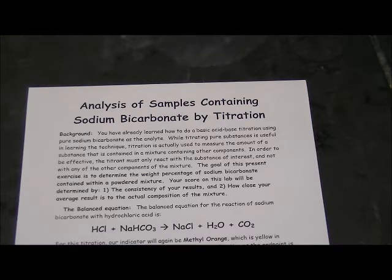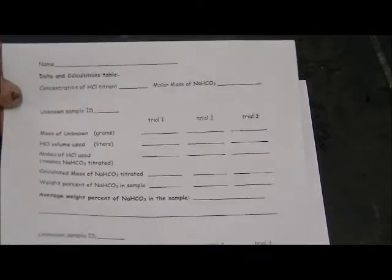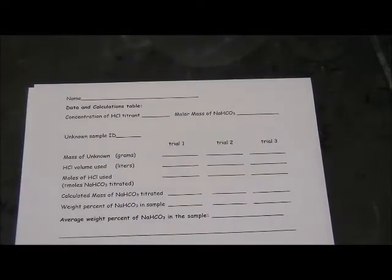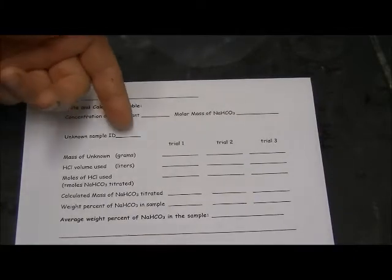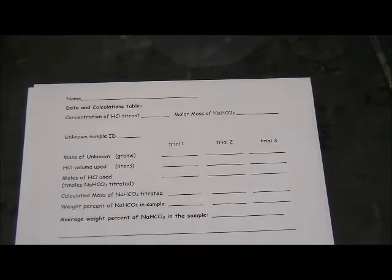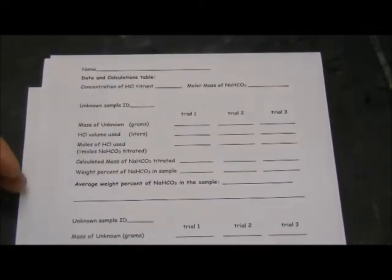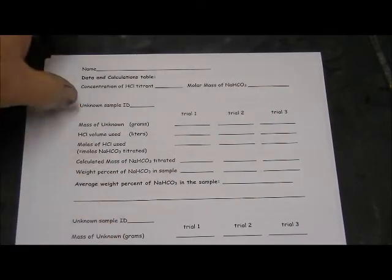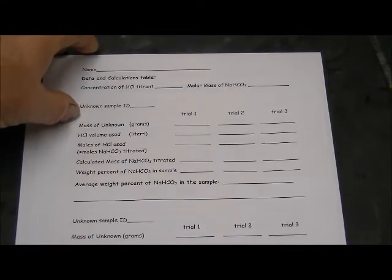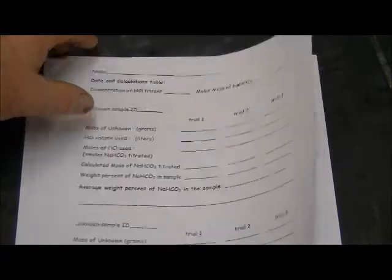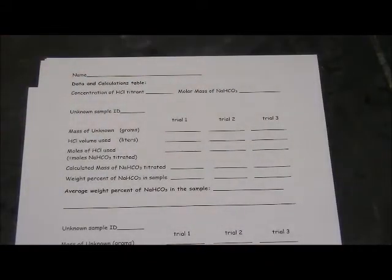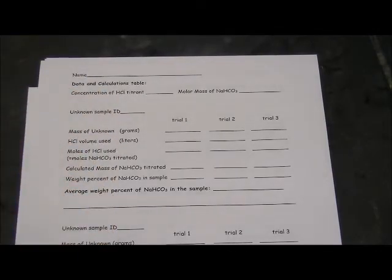The powders are labeled A, B, C, and D. And the worksheet that you'll be completing for this lab looks like this, where it has a place for your sample ID and then your work. Lower on the page is a second sample ID and your data collection and calculations. And then on the back of that a place for your third and fourth samples.